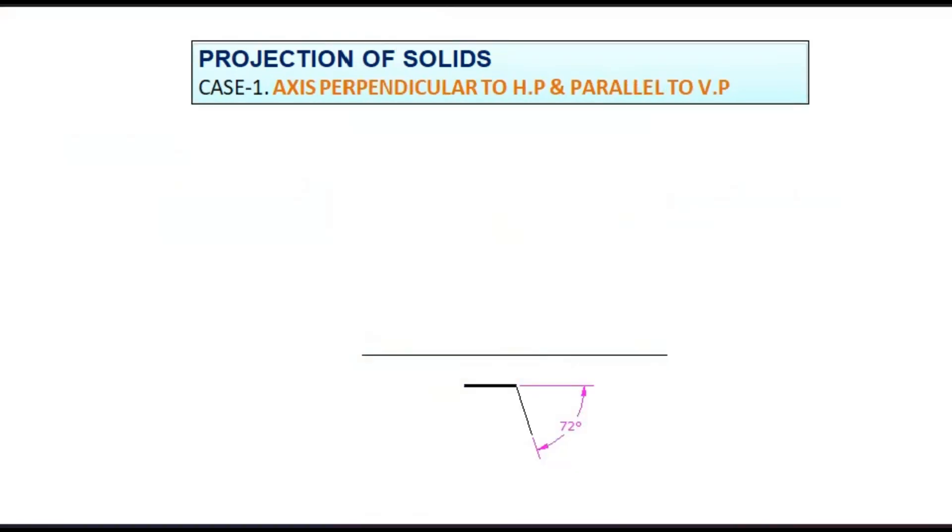Draw 72 degree lines on both sides. Draw arcs on the endpoints of these lines. The intersection point of these arcs should be joined with the endpoints of various lines. Thus, the plan is completed. Name the corners of the pentagon.